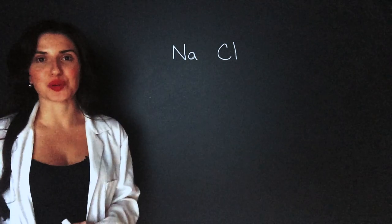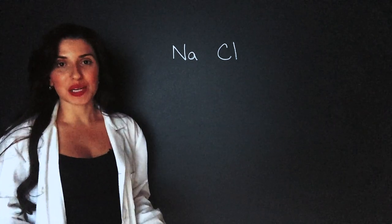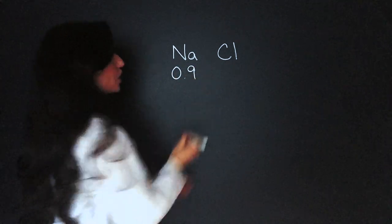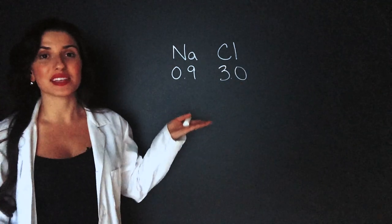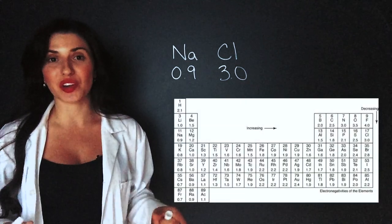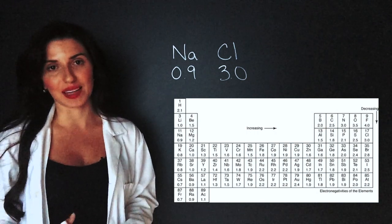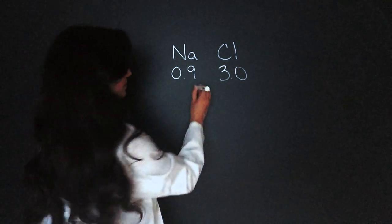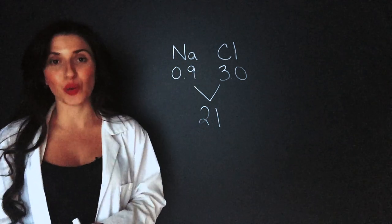My first example is going to be sodium chloride, or table salt, NaCl. Sodium has an electronegativity of 0.9 and chlorine has an electronegativity of 3.0. I found these numbers by googling an electronegativity table, which shows the periodic table but instead of atomic mass, it tells us the electronegativity under each element. The difference between these two is 2.1.